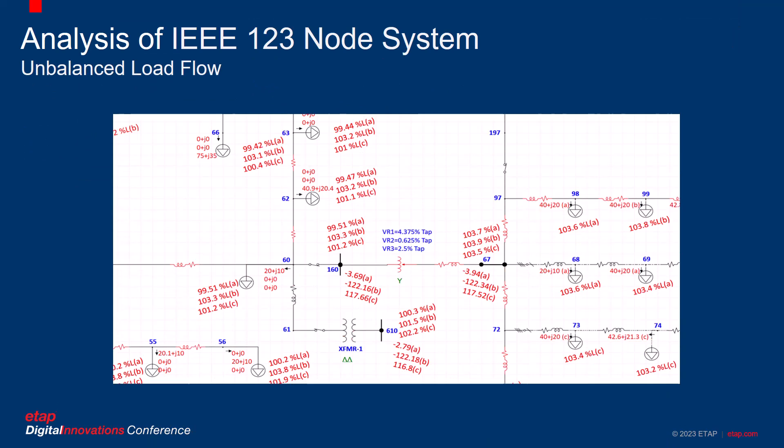One of the most fundamental analysis and sanity checks performed is the load flow analysis. For this system, we carry out a three-phase unbalanced load flow analysis. This image is a snippet of the results. The system's voltage imbalance is apparent at bus 160, where there is almost a four percent difference between the highest and the lowest phase. The voltage regulator does a fine job of increasing the voltage as well as balancing the three phases at bus 67. The bus voltages reported by ETAP match the IEEE system data sheet. The voltage regulator tap settings seen here are manually adjusted to achieve this.